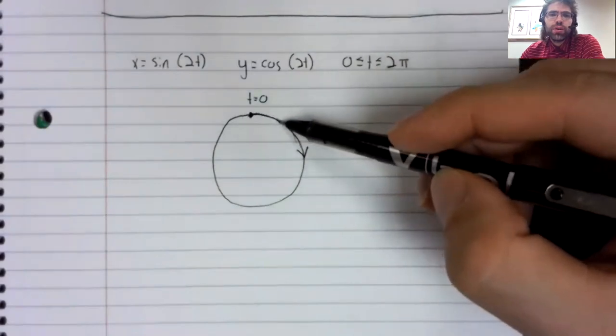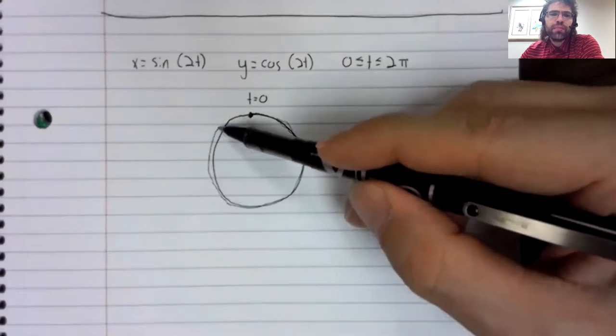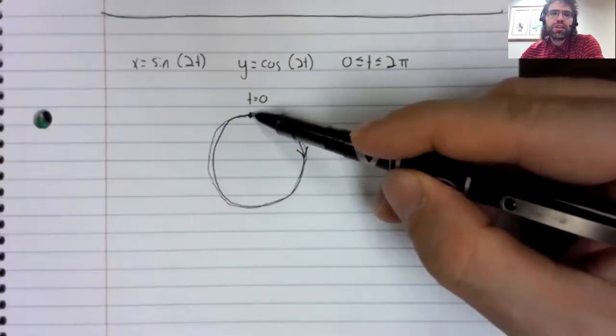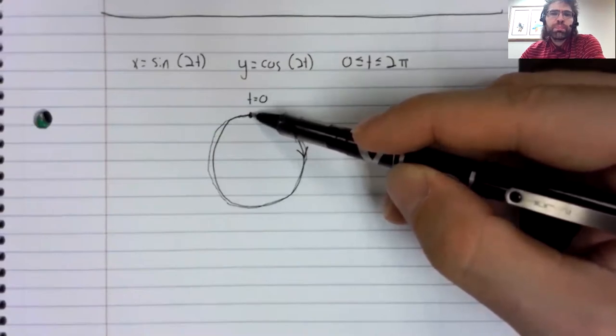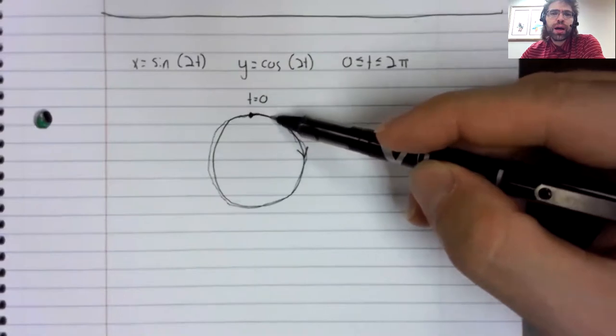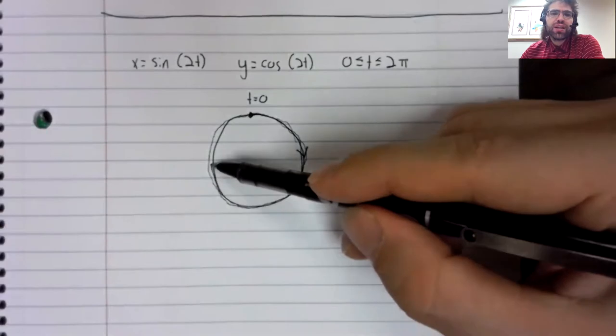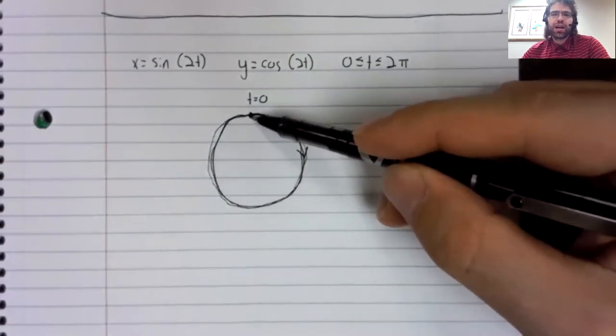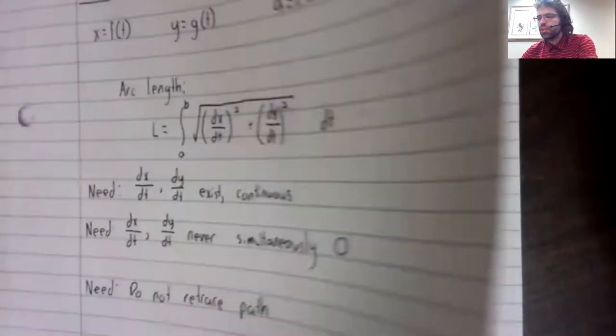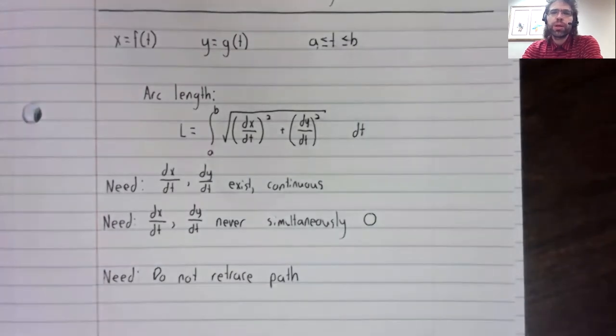Because of this two, when t equals pi, we've traveled entirely around the circle. And then between pi and two pi, we retrace that same path a second time. That is not allowed to happen if we're going to use this formula.